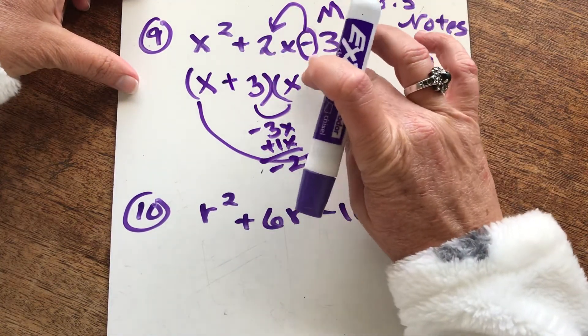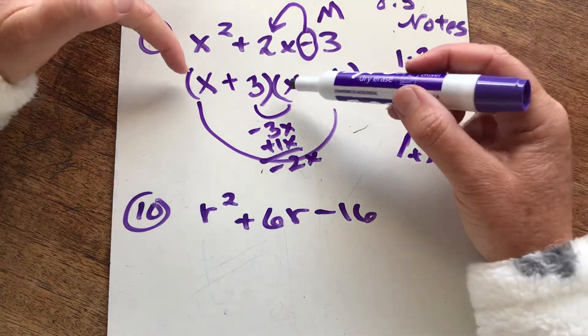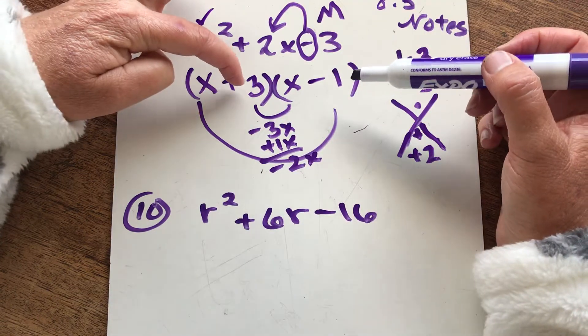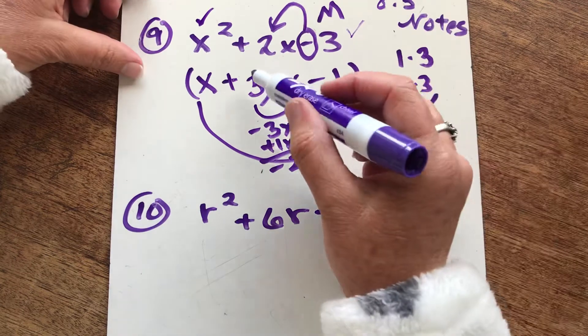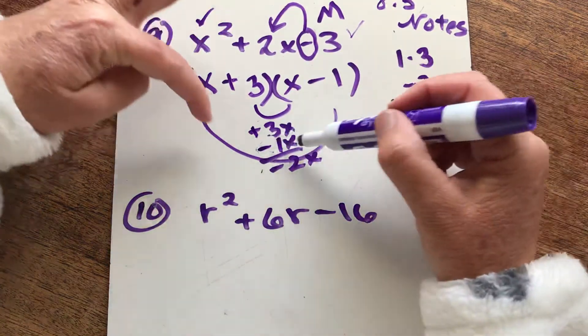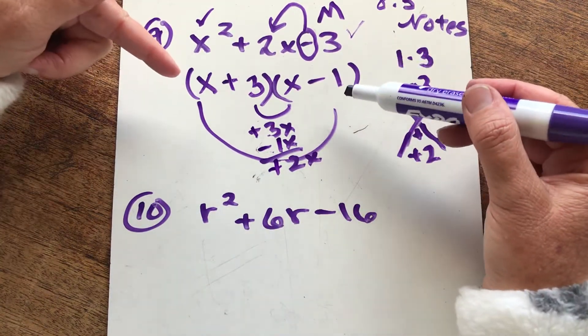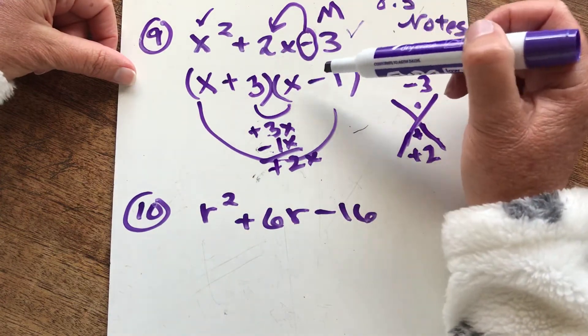So we realize we need to turn our signs around. The three should be positive and the one should be negative. Let's retry. X times X, X squared. Check. Positive three times a negative one, negative three. Check. 3X and negative one X is a positive two X. Bingo. That's my answer. So it has to be X plus three and an X minus one.